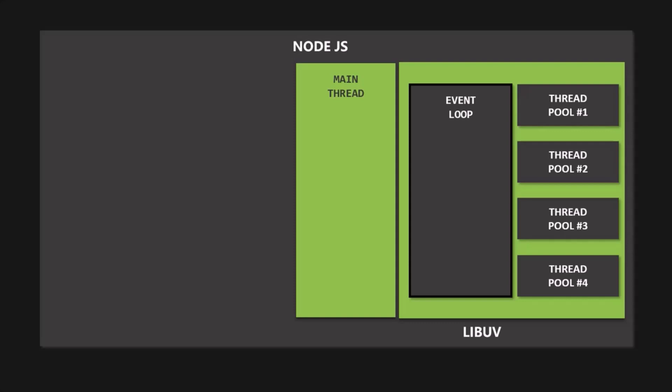In the last lecture, we learned that when the execution of Node.js code starts, it starts a process inside which we get a single thread. In that single thread, all the Node.js code gets executed. The asynchronous methods provided by Node.js are handed over to a thread in the thread pool. The thread of the thread pool is different from the single main thread of the Node.js application process. Remember that all the top-level code gets executed in the main thread.